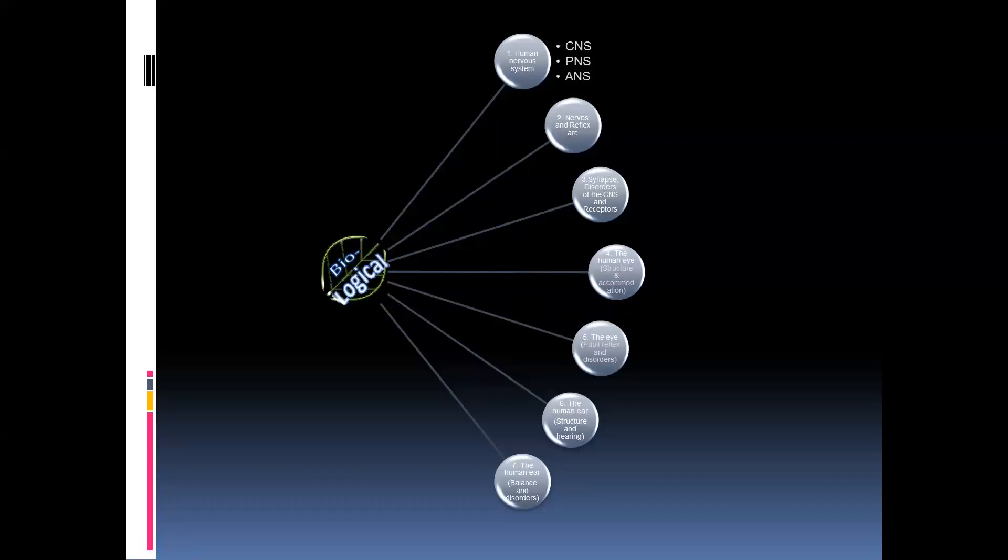In this, the fifth lesson, we continue with the human eye, but now looking at the pupil reflex and certain disorders with regard to sight.